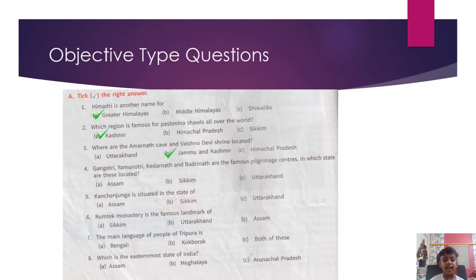Gangotri, Yamunotri, Kedarnath and Badrinath are the famous pilgrimage centers. In which state are these located? Uttarakhand. Kanchenjunga is situated in the state of Sikkim. Rumtek Monastery is a famous landmark of Sikkim. The main language of people of Tripura is both of these. Which is the easternmost state of India? Arunachal Pradesh.